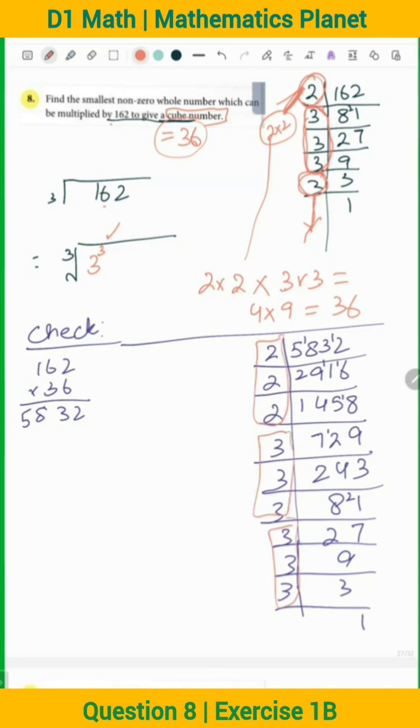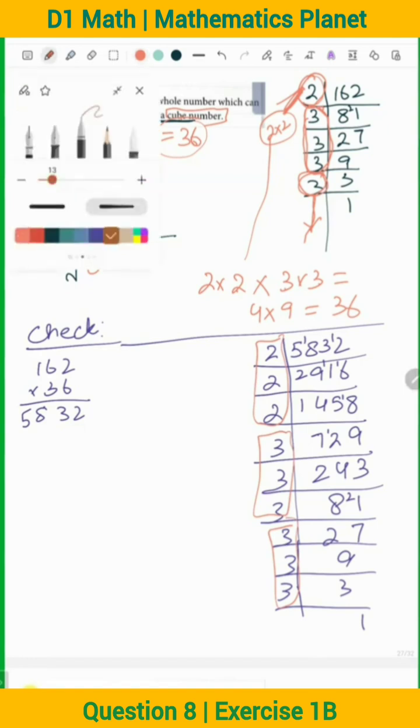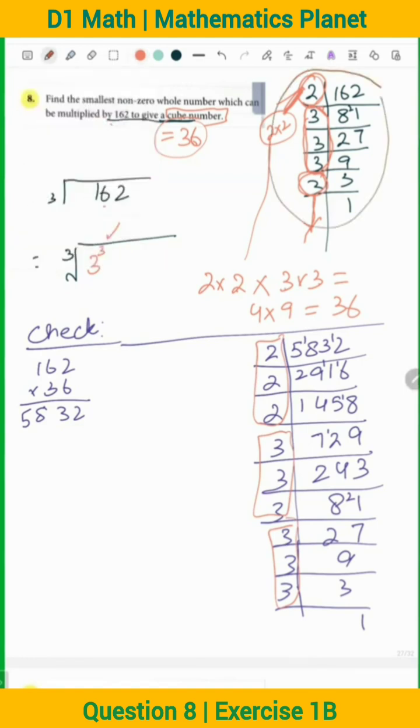The problem you were facing was there were three 3's but the 2's and 3's were missing. When you multiply them you got 36, so 36 is the missing number. When you multiply 36 with 162 you get 5832 which gives you a perfect cube. You can recheck this recording because this is a bit critical.